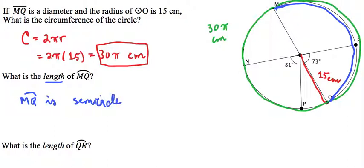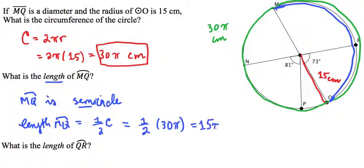So therefore, we can say that the length of MQ is equal to one half of the circumference. Because semi means half, right? So we can do this calculation relatively quickly. It's one half times the circumference, which we know is 30π centimeters. So this turns out to be 15π centimeters as the length of the arc MQ.